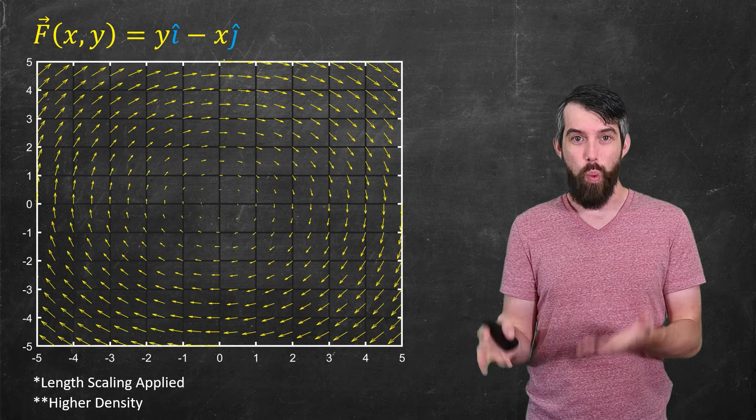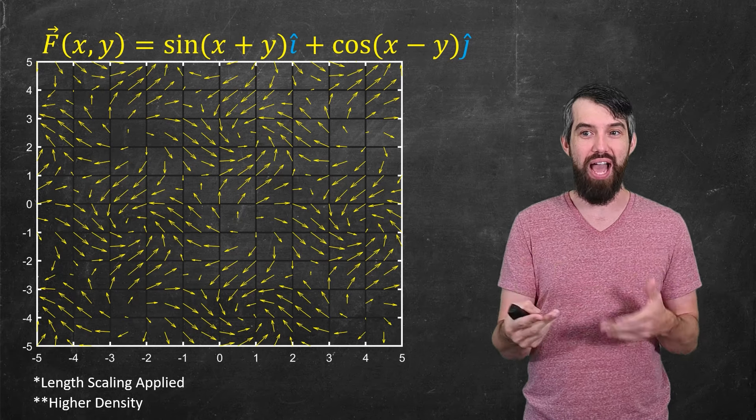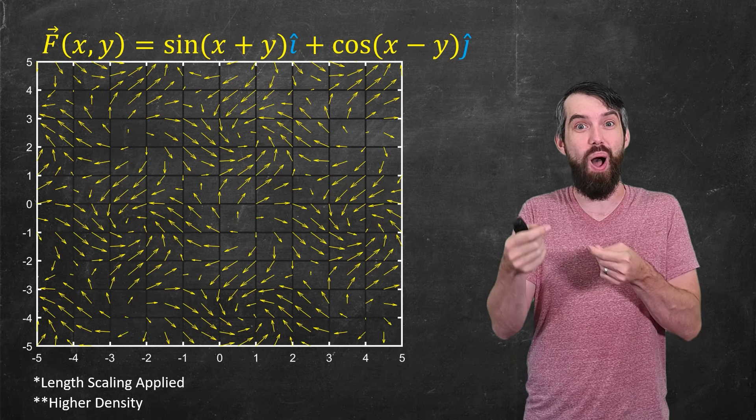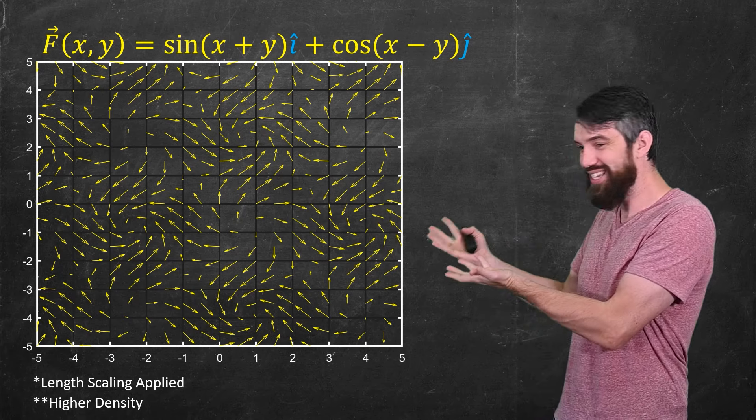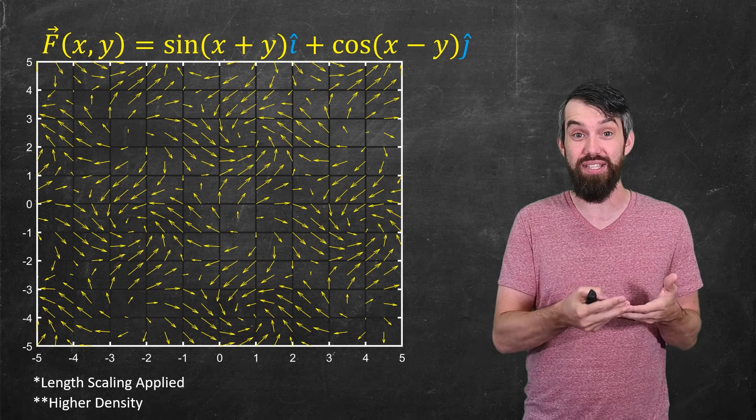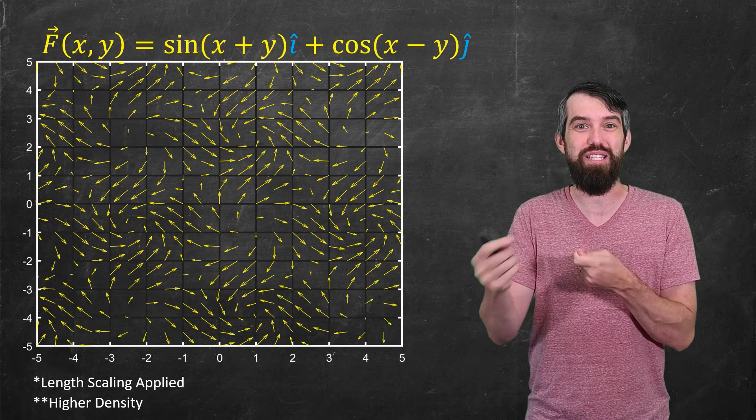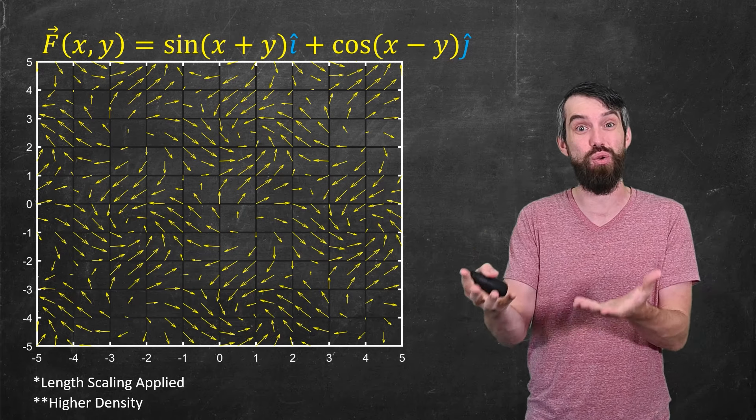Okay, so this was one. Let's just take one more. This is just one that I think is kind of pretty. It's sin(x+y) in the i-hat and cos(x-y) in the j-hat. And as you can see, they just get kind of interesting and with a little bit of length scaling and density adjustments, you can make these really pretty plots. And so often you've played around with these features just to get it to something that you can visualize nicely.